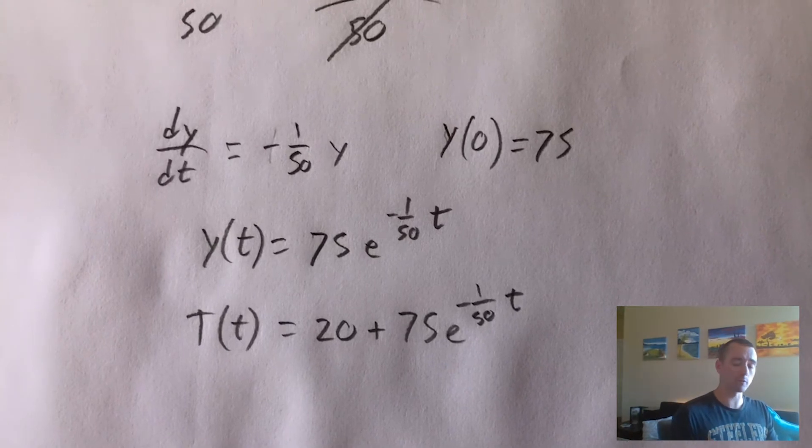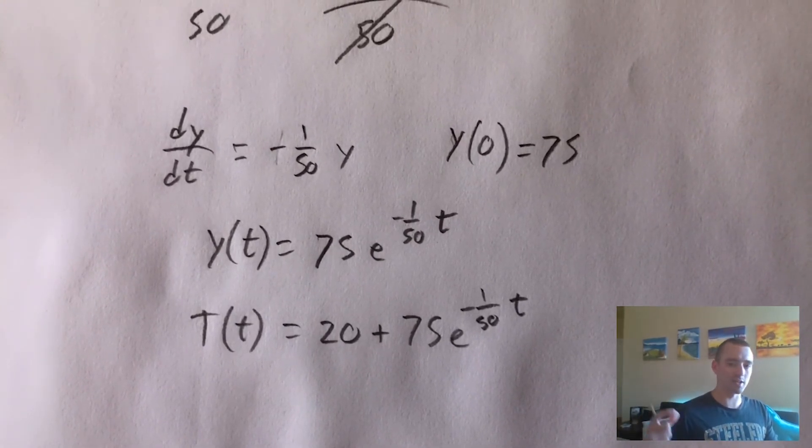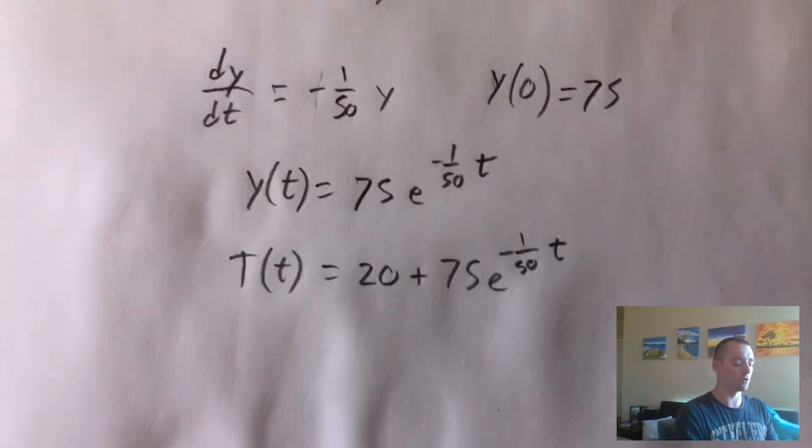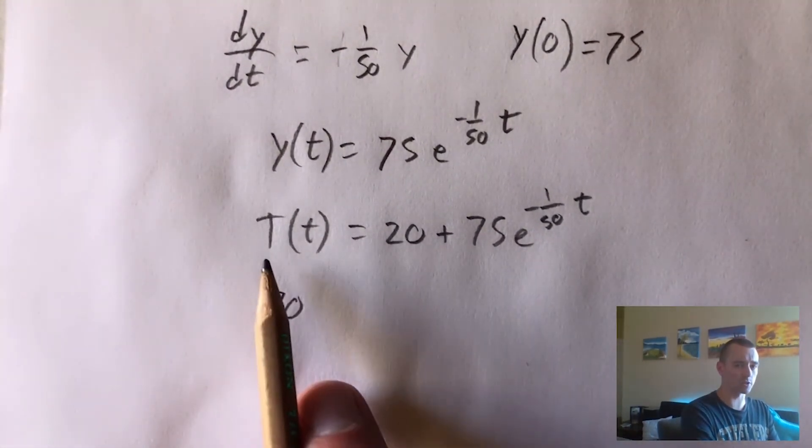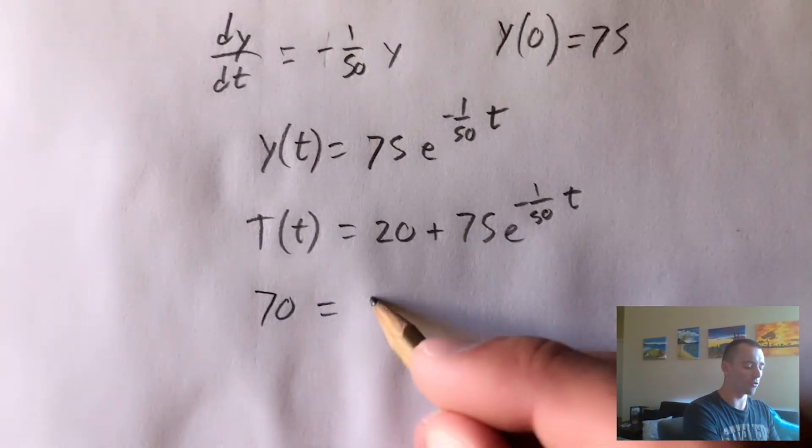Well, remember, what we're trying to find is how long it took for the temperature to get to 70 degrees. So if the temperature is 70 degrees, we can just plug in 70 for our temperature and solve for time.